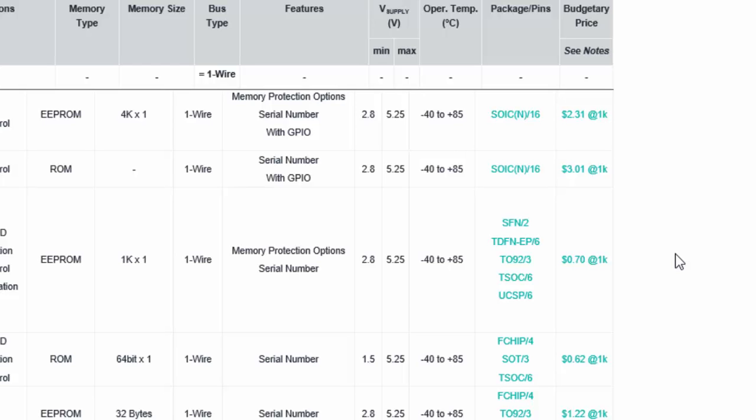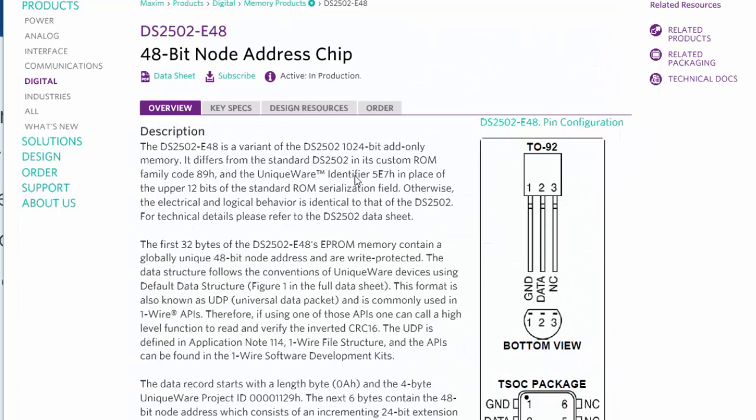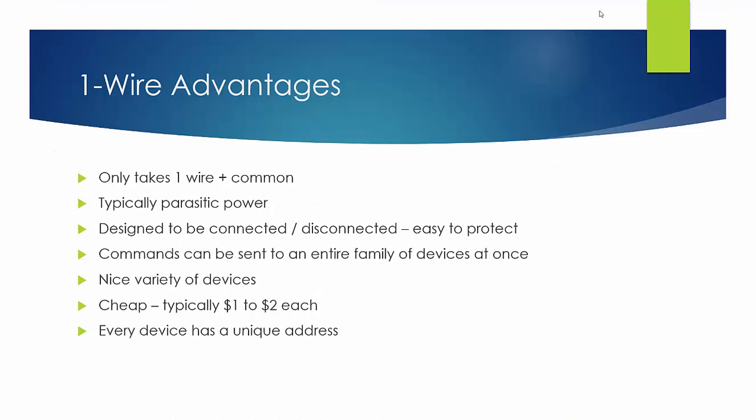The device that we happen to be using for this is a DS2502E48. This device is a 48-bit node address. In other words, it gives us a worldwide unique 48-bit node address or a MAC address that we use in our products. And we pay about a dollar and a half for these devices. Every device when it's manufactured is assigned a unique address, and that can be used for serializing hardware and other applications that require a unique address.